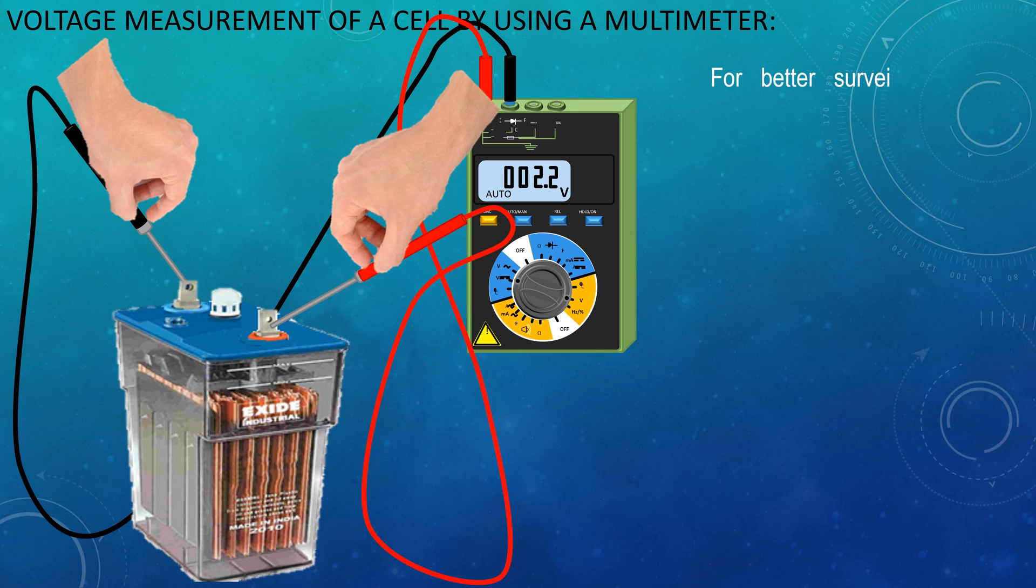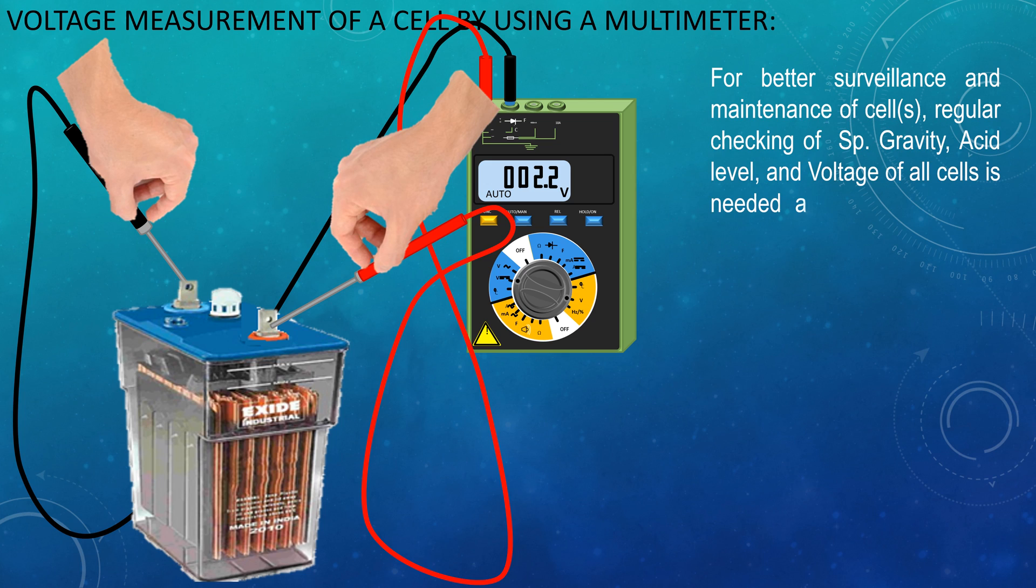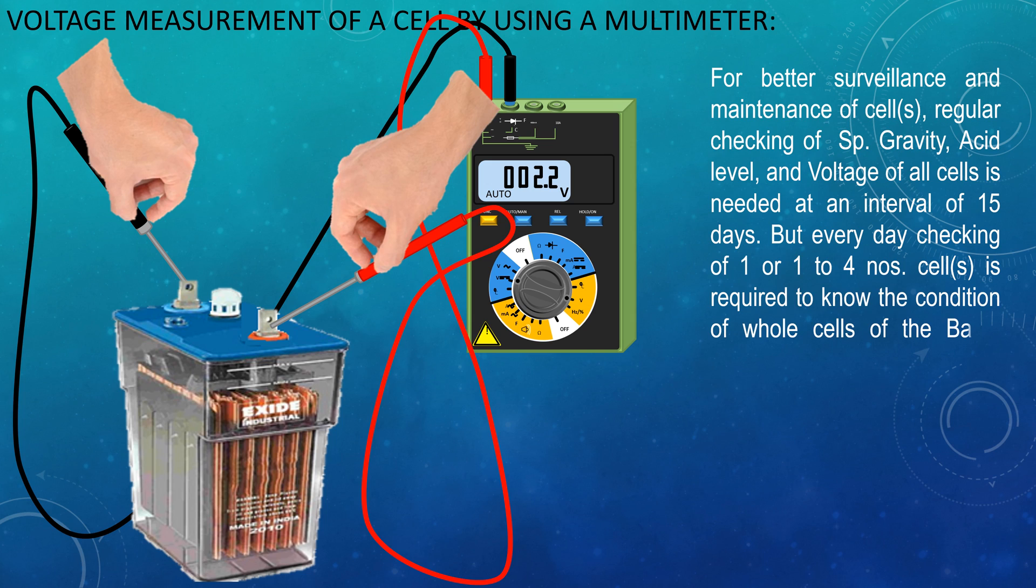For better surveillance and maintenance of cells, regular checking of specific gravity, acid level and voltage of all cells is needed at an interval of 15 days. But everyday checking of 1 to 4 number of cells is required to know the condition of whole cells of the bank. This 1 or 1 to 4 number cells is termed pilot cell. The pilot cell will describe primarily the conditions of whole cells of the bank.